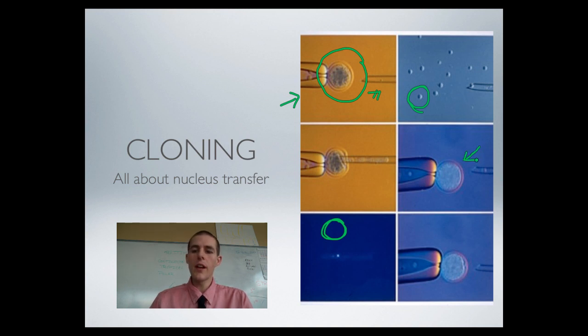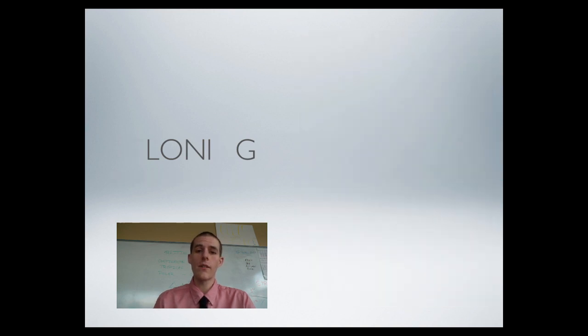Take that nucleus, put it into your egg that you have just emptied out, induce it to divide, and most times it will actually go through and divide into a full organism. Because each of your cells has got all of the instructions in it needed to build a completely new you. So that's the basic process of nucleus transfer. You're taking a full nucleus from a diploid cell, sticking it into an emptied out egg, inducing the thing to divide, and hopefully, if all goes well, getting a new organism.